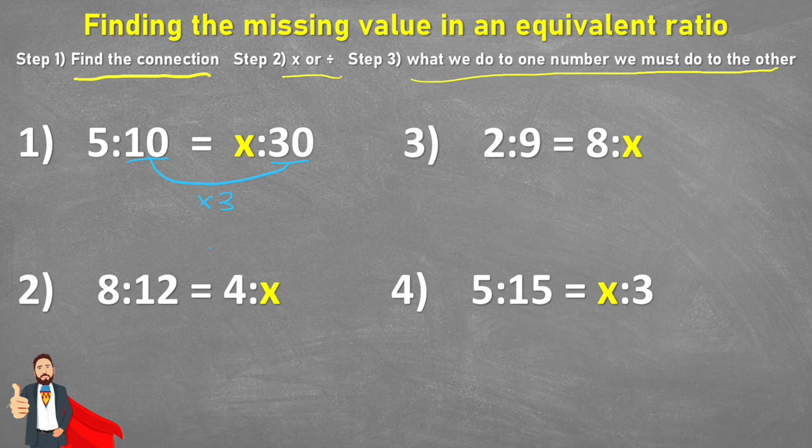Then step three says whatever I do to one of the numbers, I must do to the other. So if we multiplied the second digit by three, therefore we have to multiply the first digit by three to get the equivalent ratio. So if I was to multiply my five times three, I would end up with 15. So therefore x equals 15.